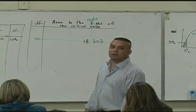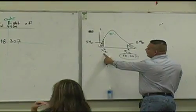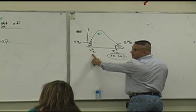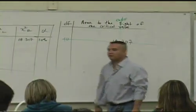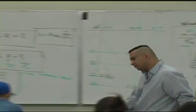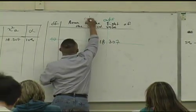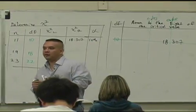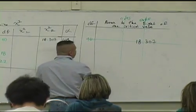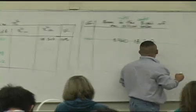What that means is your right critical value is 18.307. And how do you find the left one? Here's what you do. For the left one, can you tell me what area's to the right of that left critical value? 90 and 5 is what? 95. Where's the 95 column? Where's the 95 column at? Yeah. 0.95? 0.95. So, what do you see in the 0.95 column, row 10? 3.940. This is the left critical value.